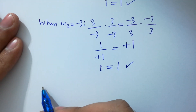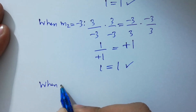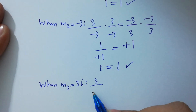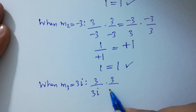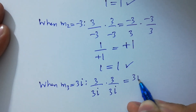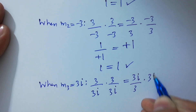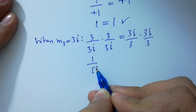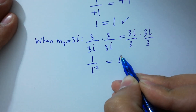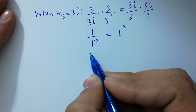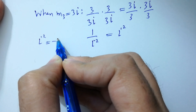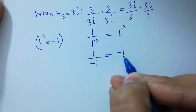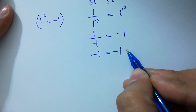When m3 equals 3i: (3/3i) times (3/3i) equals (3i/3) times (3i/3). The 3s cancel, giving (1/i) squared equals i squared, which is 1 over i squared equals i squared. Since i squared equals minus 1, we get minus 1 equals minus 1, which satisfies the equation.